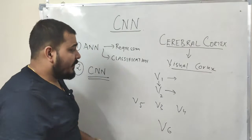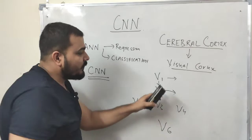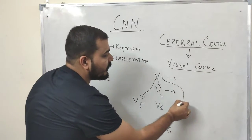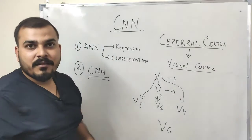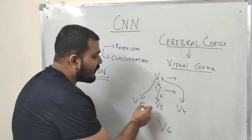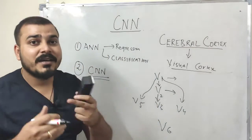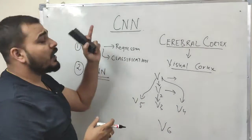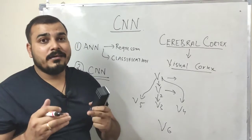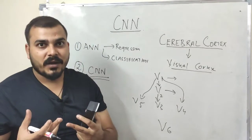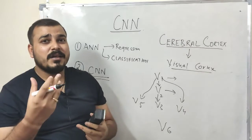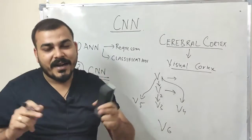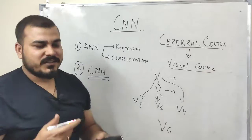Similarly, information also passes from V1 through V3, V4, and V5, with each layer responsible for a different kind of operation. When we discuss CNN specifically in the next class, you will call these layers 'filters'. Each filter is responsible for a specific task — for example, one filter finds edges, another may be responsible for finding the face shape.